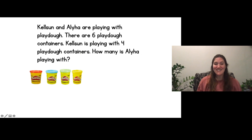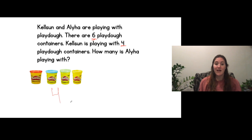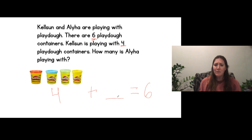Here's your next one. This says Kelson and Aaliyah are playing with play-doh. There are six play-doh containers. Kelson is playing with four play-doh containers. How many is Aaliyah playing with? So there are six play-doh containers altogether, Kelson is playing with four of them. So these are the four that Kelson is playing with, plus how many does Aaliyah have that equals six altogether. You count on and figure out how many Aaliyah has — you can do it!